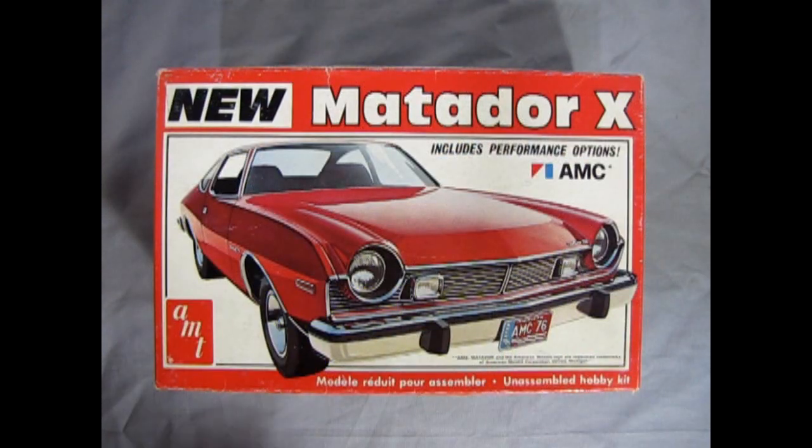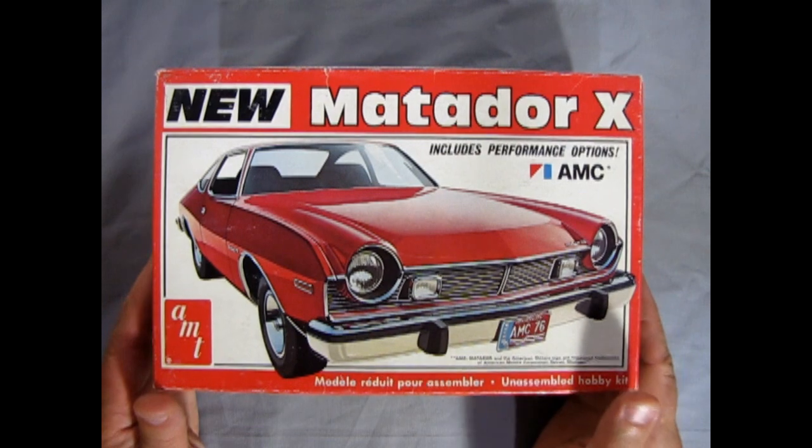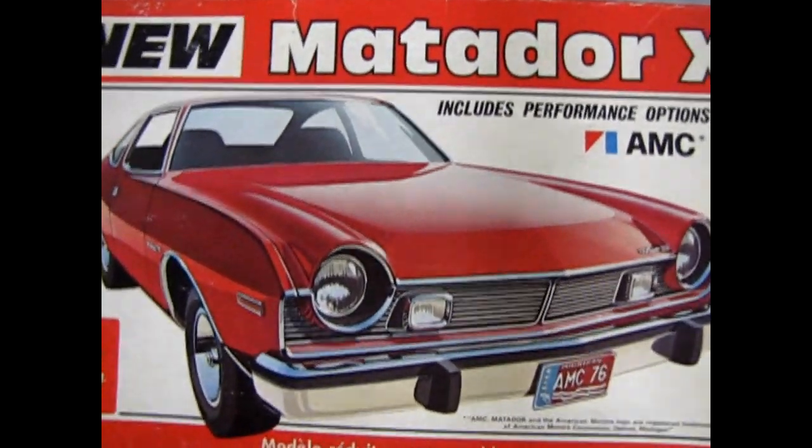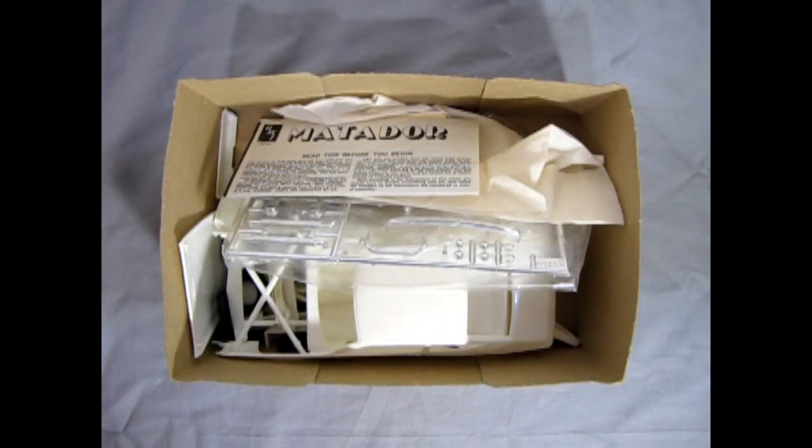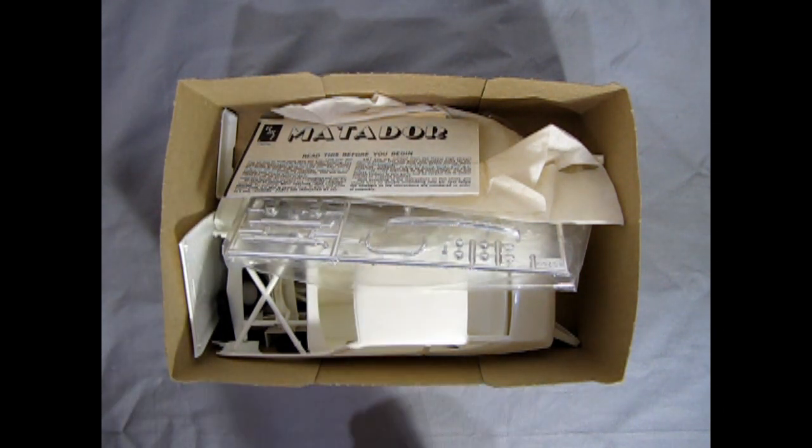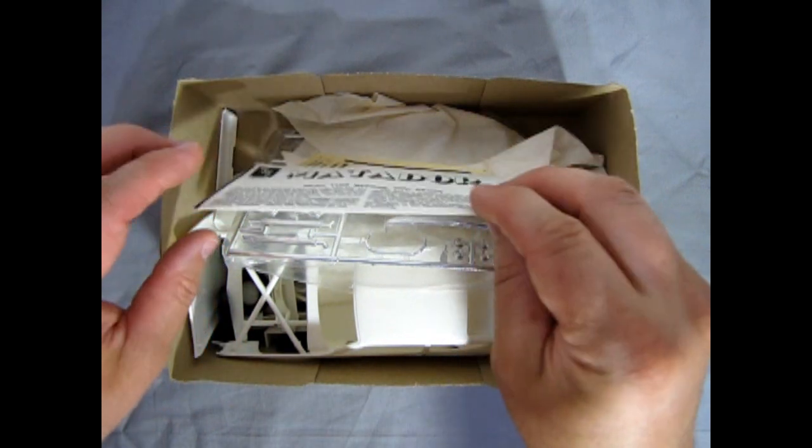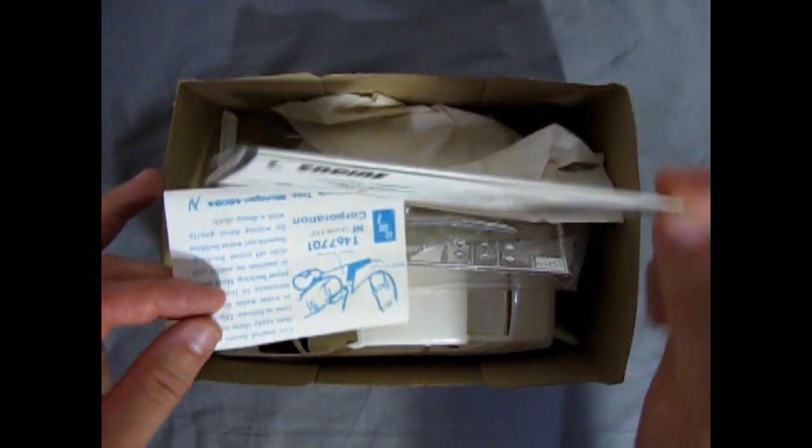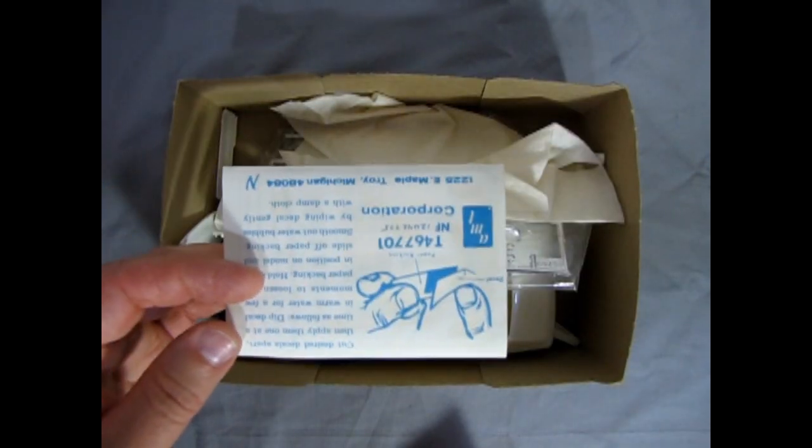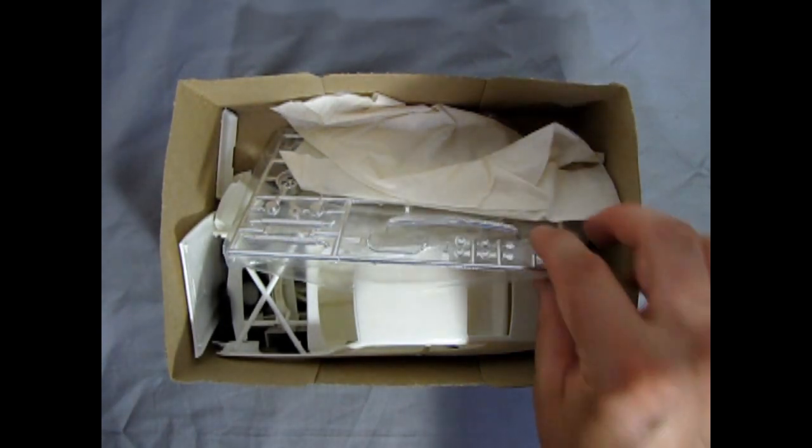Now this model kit I did buy second hand. So you're about to see some interesting stuff inside as I lift off the lid. And here we have all our components. And now somebody was nice enough to put some of them into paper towel. We do have our instruction sheet and a decal sheet which we'll take a look at toward the end of the video.